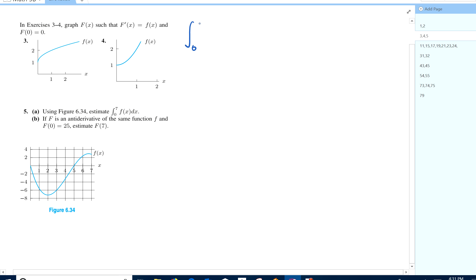The integral from zero to X of F of X, DX is capital F of X minus F of zero, which is zero, so it's just capital F of X. So we're basically graphing the antiderivative of this. So what does that kind of look like?